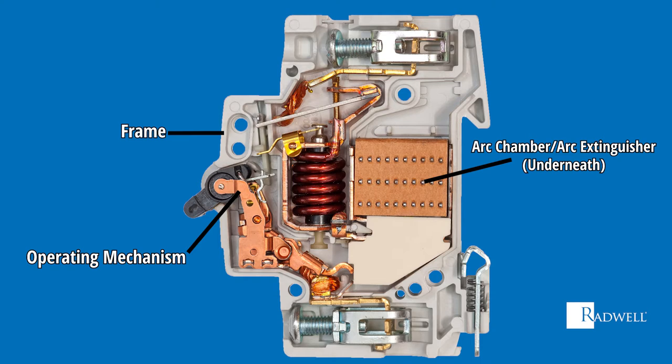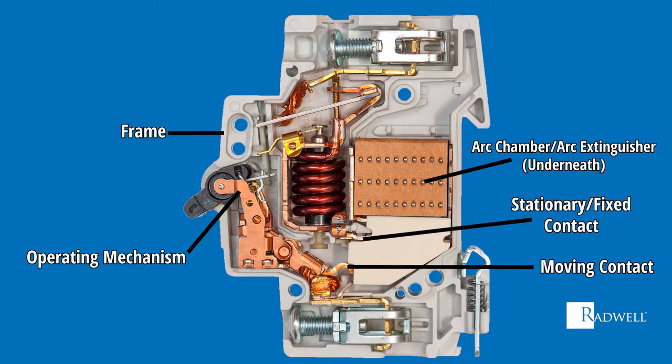The next component is the contacts, which consists of the movable contact, the movable contact arm, the stationary contact, and the stationary conductor. These contacts are what allow the current to flow. Last is the trip unit, which is the most important part of the circuit breaker. The trip unit senses the fluctuation in the current flow and trips the operating mechanism.